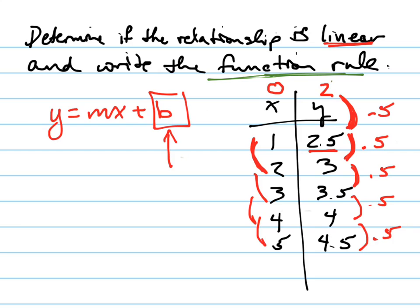So my starting point is 2, and what am I adding? Every time I add 1, x, what am I adding to the y? I'm adding 0.5, so it's 0.5x. There's my equation.